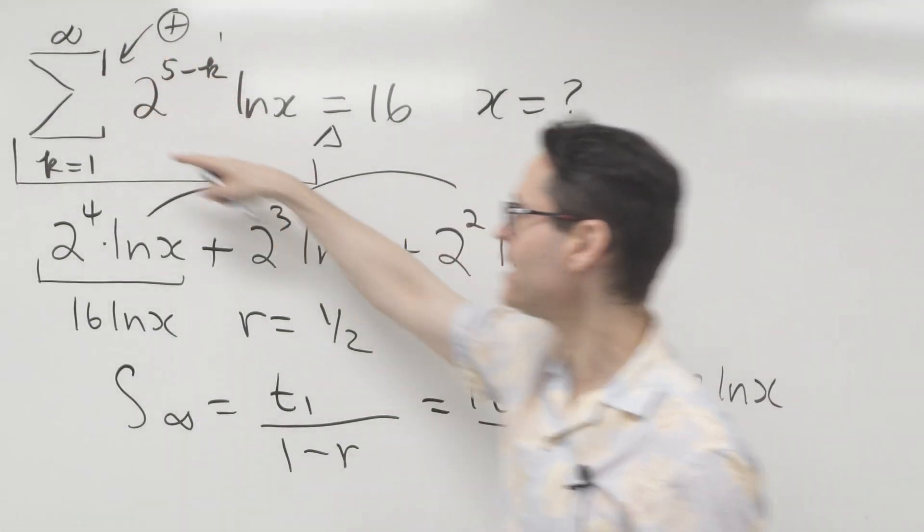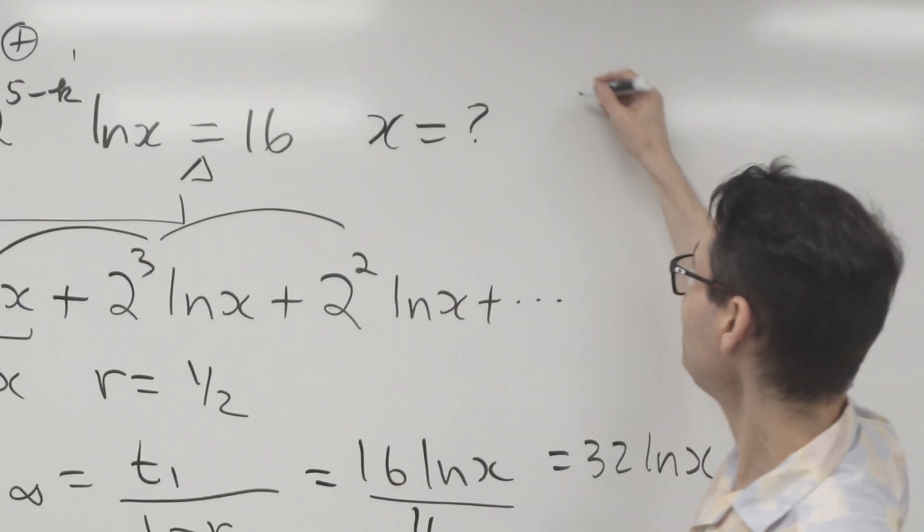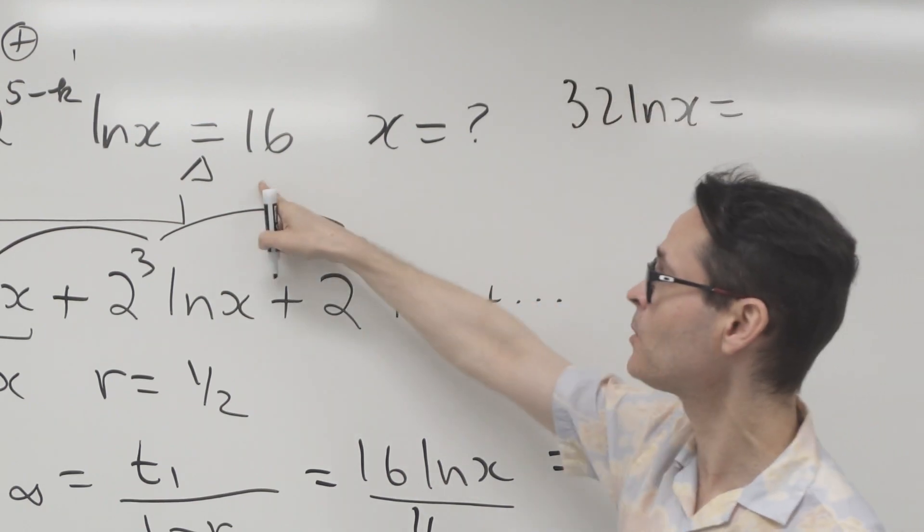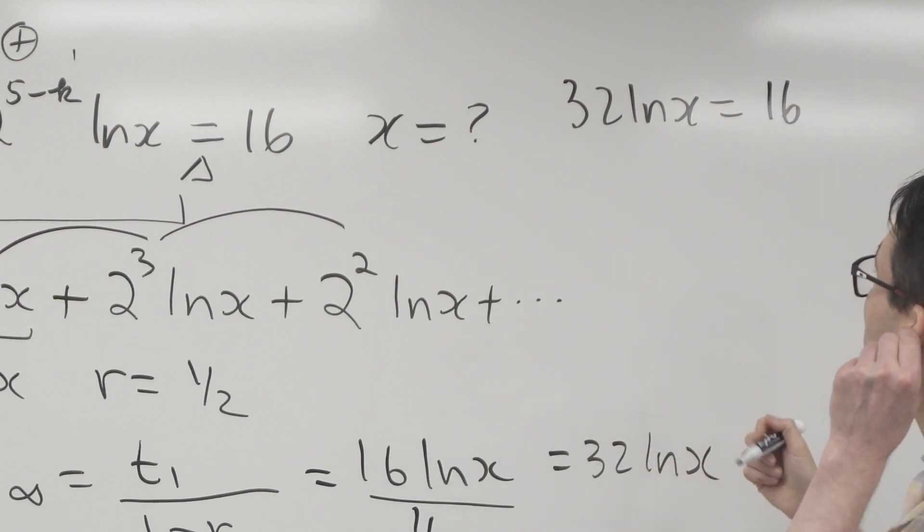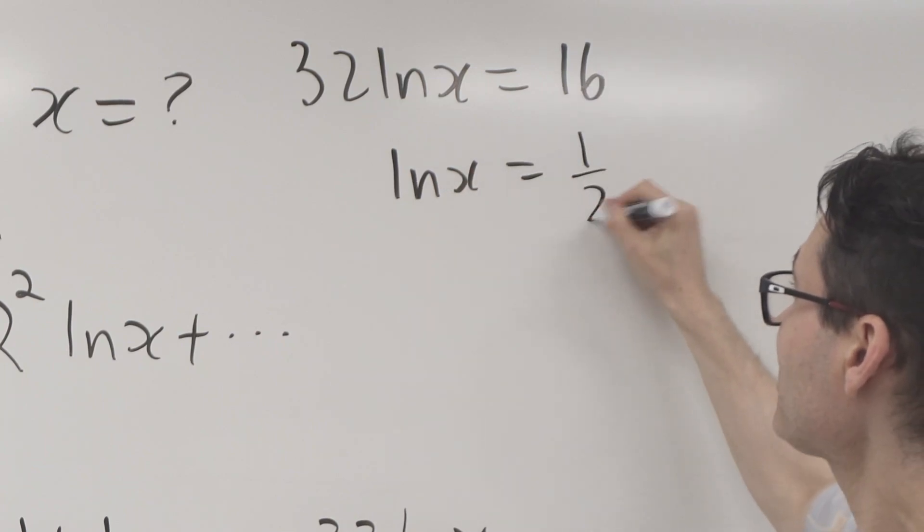So now what we have is the left-hand side can be completely written as 32 ln x. So that means that 32 ln x is equal to the right-hand side, which is 16, and now you're dealing with a log question. Divide both sides by 32, and the ln of x is equal to 16 divided by 32, or a half,